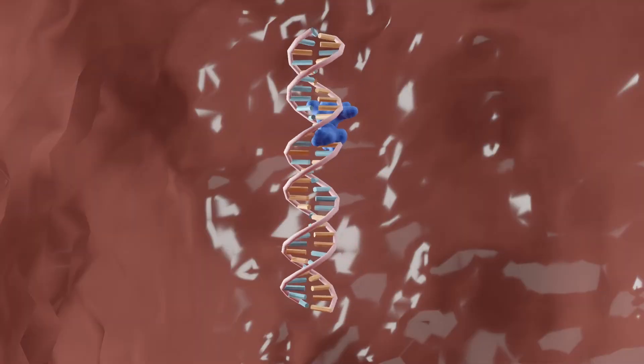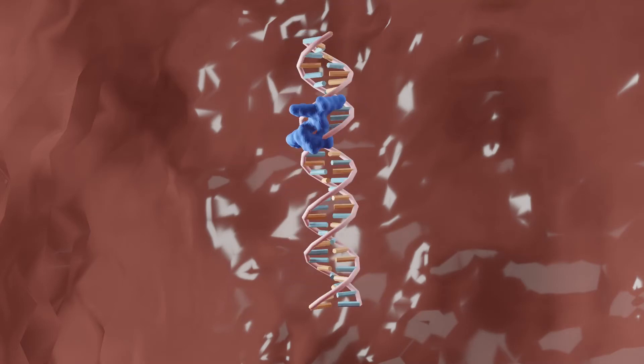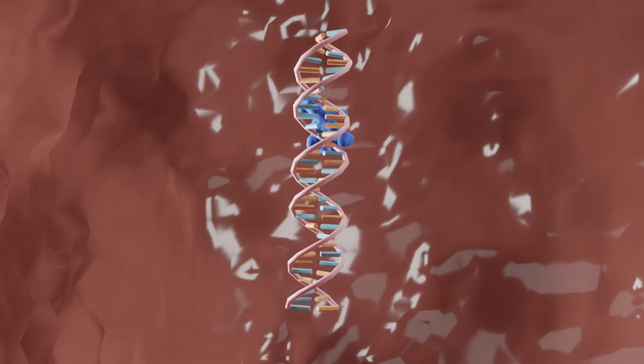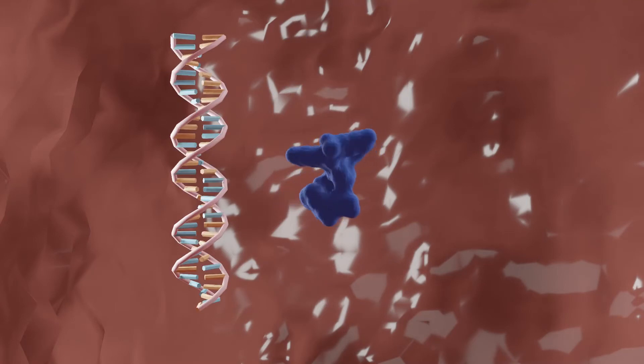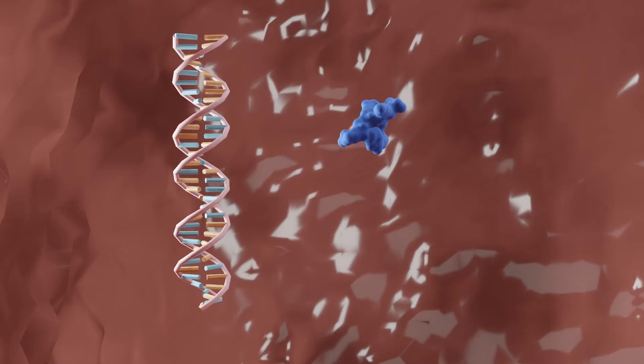One way proteins recognise SMARs are by an AT hook. The hook contains the amino acid sequence glycine-arginine-proline, which can bind to the minor groove of SMAR sequences, rich in adenine and thymine.